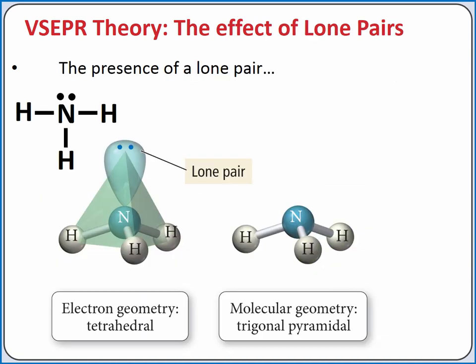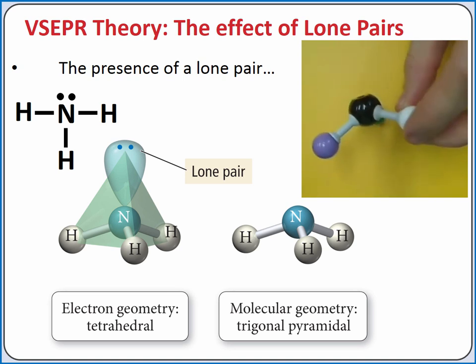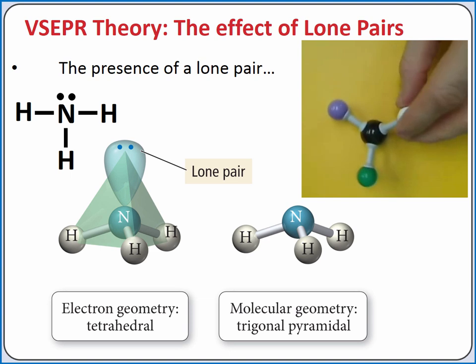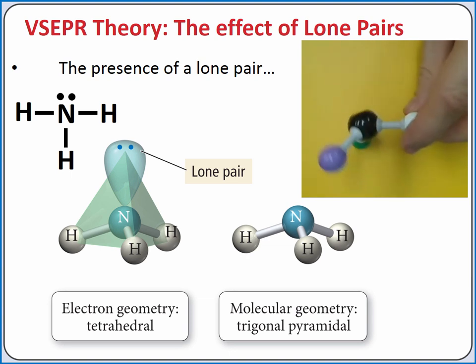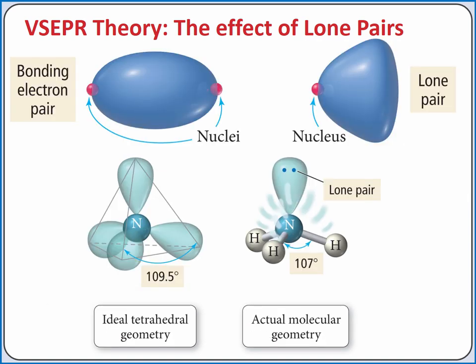The presence of a lone pair of electrons changes the name of the molecular geometry. For example, if we have three bonding groups and one lone pair of electrons on the central atom, as we do in ammonia, our molecular geometry becomes trigonal pyramidal. Just like a multiple bond, a lone pair of electrons can take up more room around the central atom and change the other bond angles slightly. In ammonia, instead of bond angles of 109.5 degrees, the lone pair of electrons repels the other electron groups so that they are 107 degrees apart.